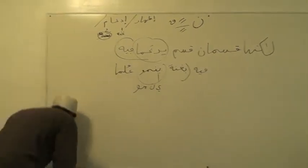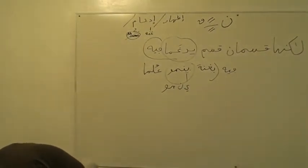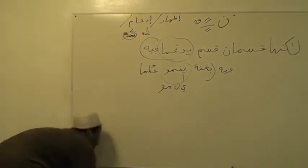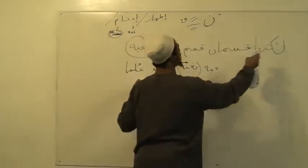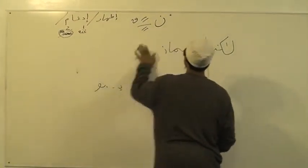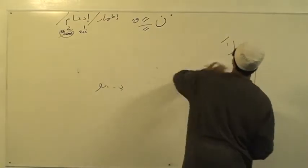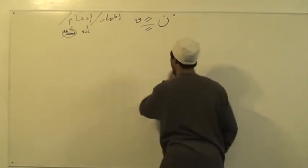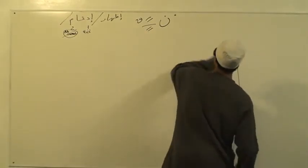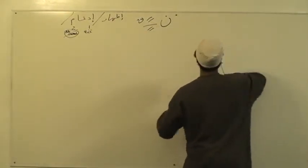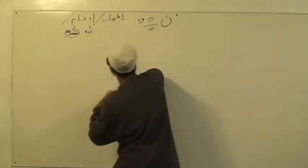After we get through with this, we go on to the next point. What it means is those four letters — ya, noon, meem, wow. You can remember them by the word يَنْمُوا. So Idgham has Gunnah in four letters: ya, noon, meem, wow. You have to know that.